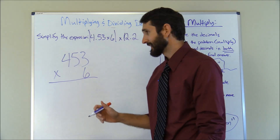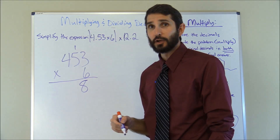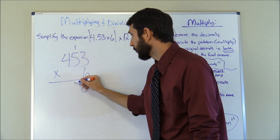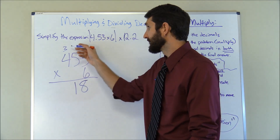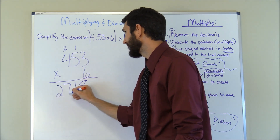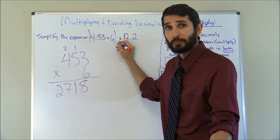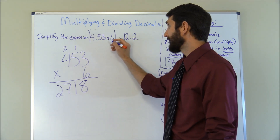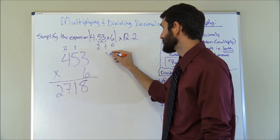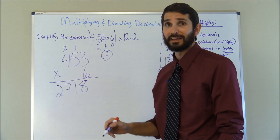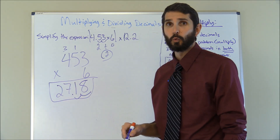Let's solve 453 times 6. 6 times 3 is 18 — put the 8, carry the 1. 6 times 5 is 30, plus 1 is 31 — carry the 1 and the 3. 6 times 4 is 24, plus 3 is 27 — carry down the full 27. Now find the decimal: 6 is a whole number with zero decimals, and 4.53 has two decimal places. Two plus zero is two, so we move the decimal two places from the right — one, two — giving us 27.18.